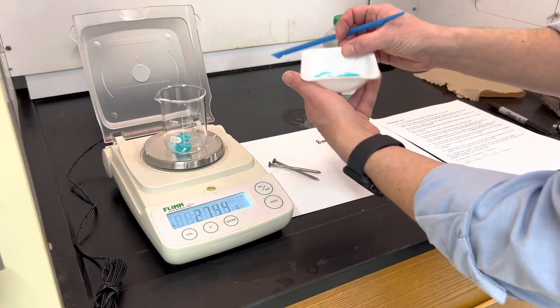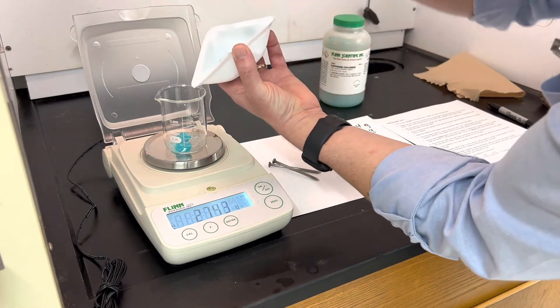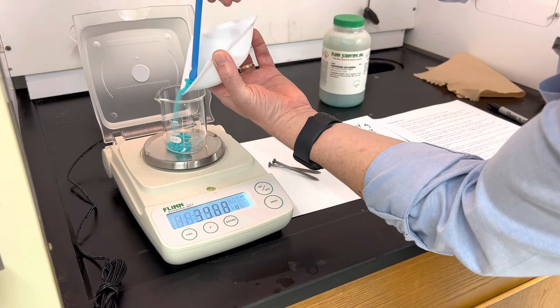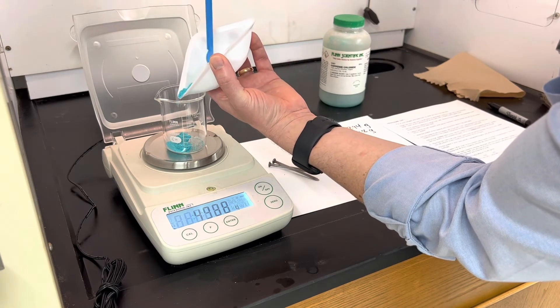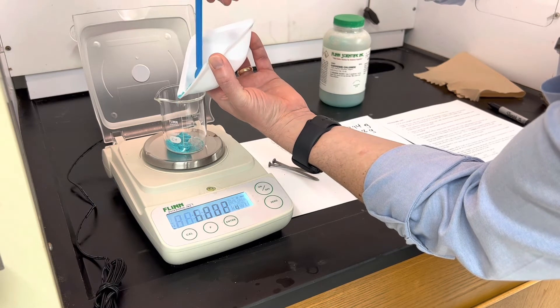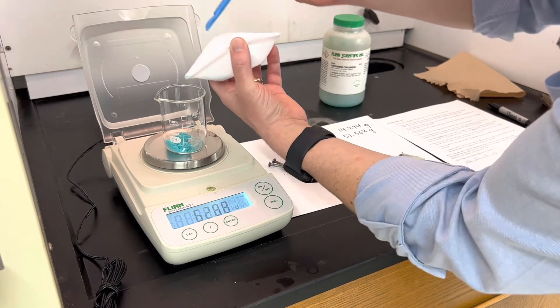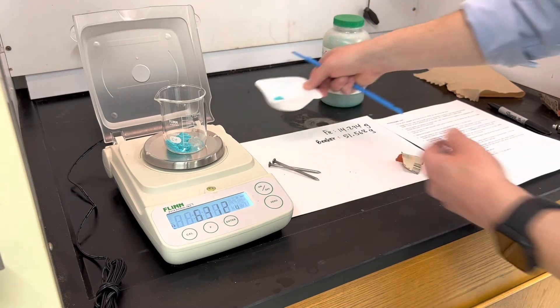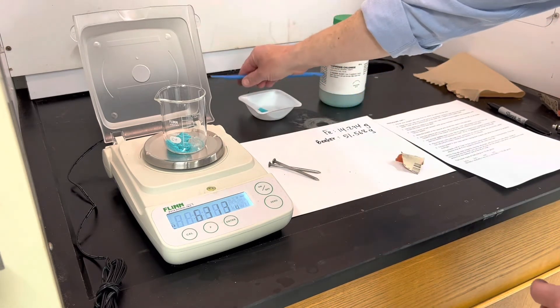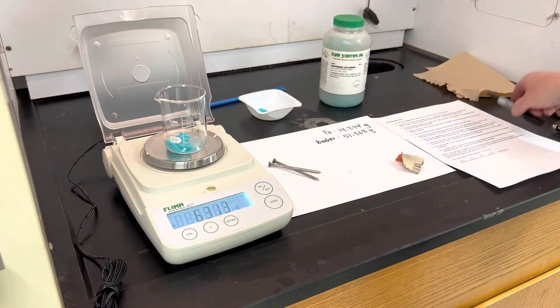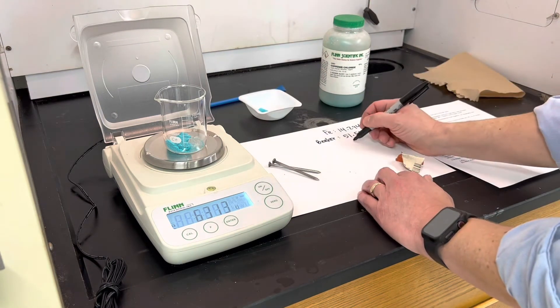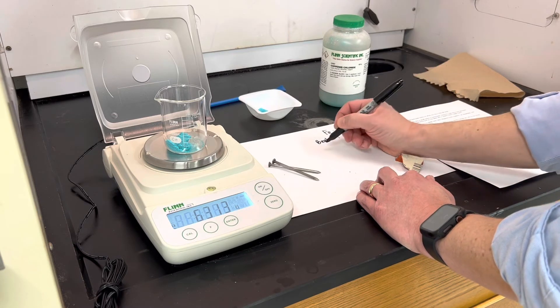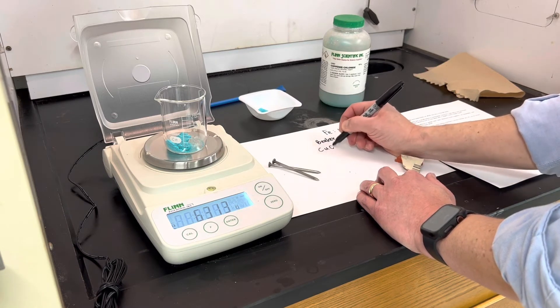Another way I can add this if it's in a weighing dish already is just use the dish to transfer. And I'm over 6 grams, so I'm going to go ahead and use that value: 6.313 grams. That is my copper chloride.